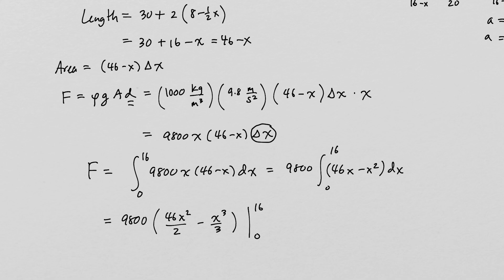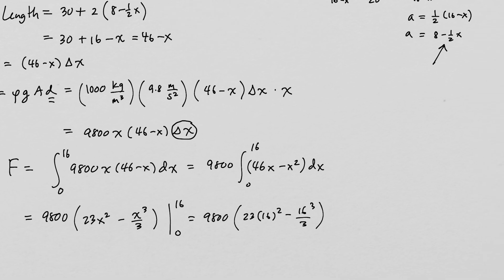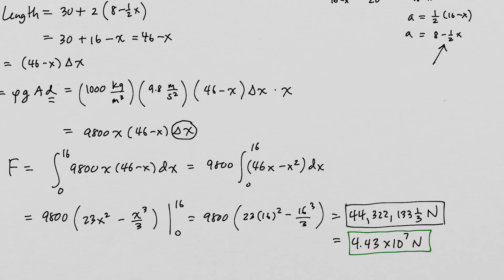Since plugging in 0 gives nothing, we only need to plug in 16: 9,800 × [23(16²) − (16³)/3]. This gives 44,322,133 and one-third newtons. Rounded to three significant digits, that is 4.43 × 10⁷ newtons.